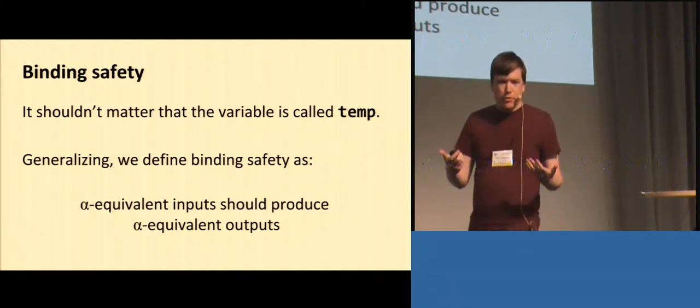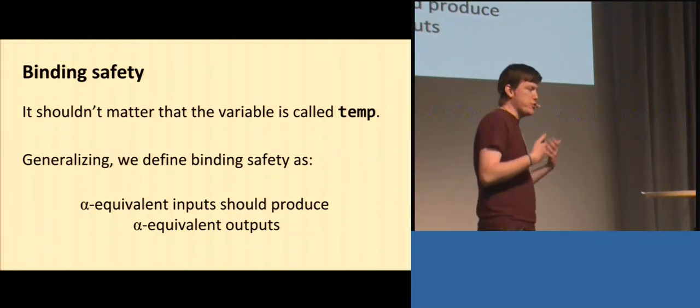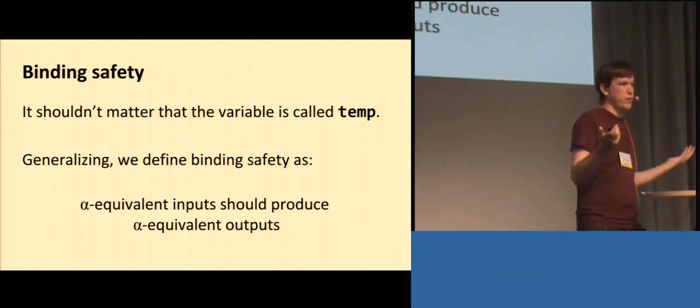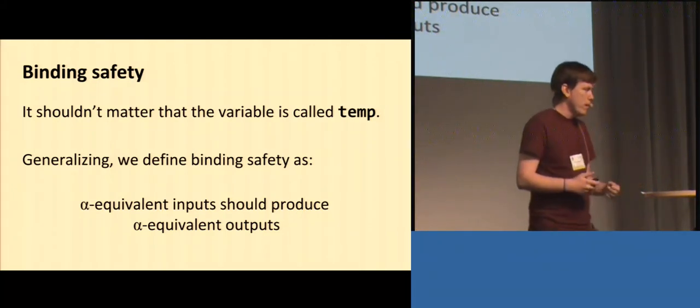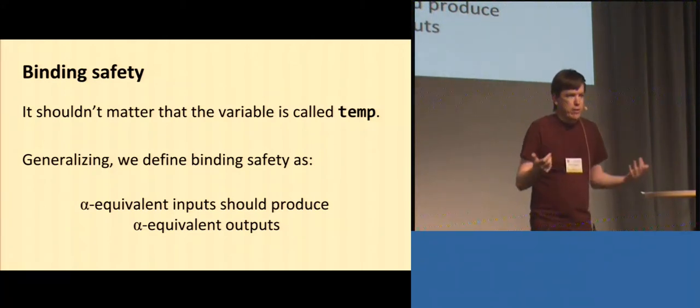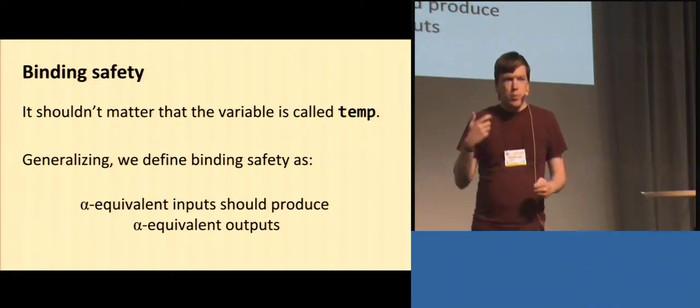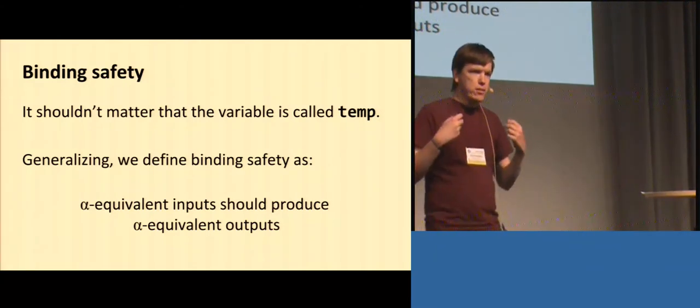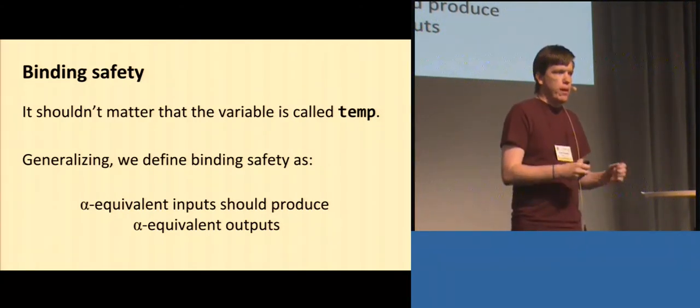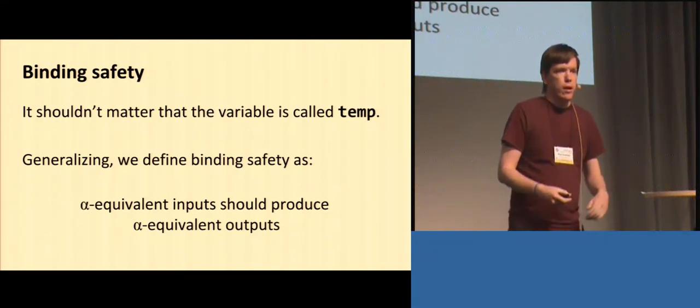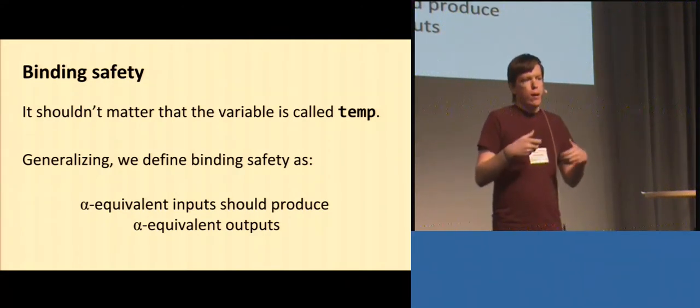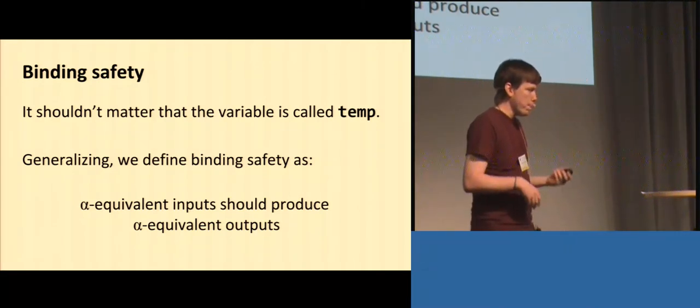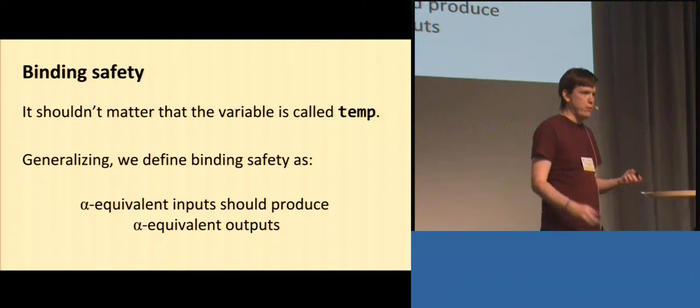I say that a language should be binding safe. I shouldn't have been punished for the fact that I happen to have chosen a slightly short and uncreated variable name. What I really mean by this is that, as a general rule, it should be possible to perform any kind of renaming on input code. Pass it through your metaprogramming system, and whatever the metaprogrammer did, the output should always be the same, up to possibly some renaming on the other end. Alpha equivalent inputs should produce alpha equivalent outputs.